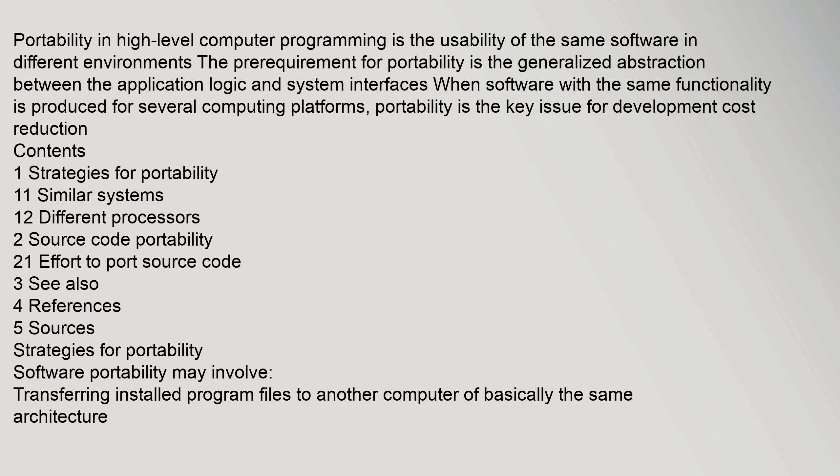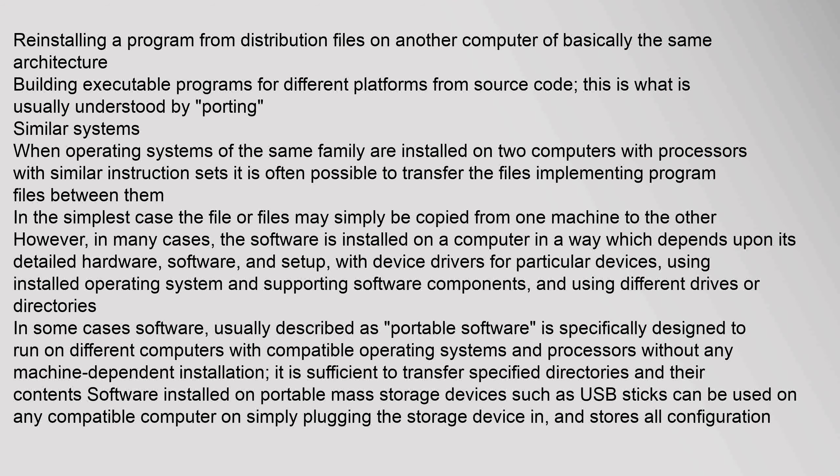Software portability may involve transferring installed program files to another computer of basically the same architecture, reinstalling a program from distribution files on another computer of basically the same architecture, or building executable programs for different platforms from source code. This last option is what is usually understood by porting.